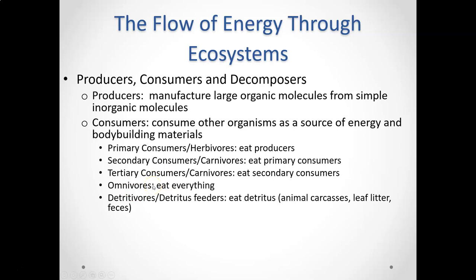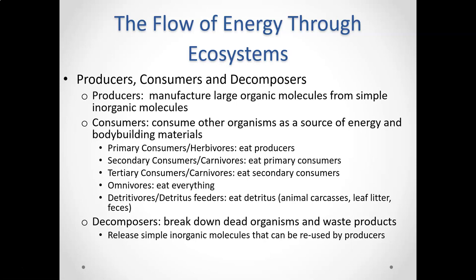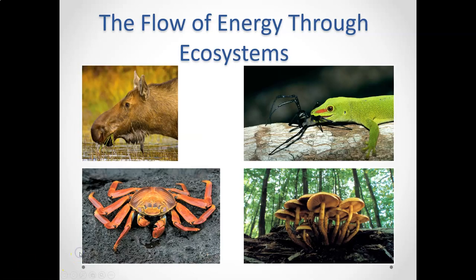There are also omnivores, which eat everything — carnivores, herbivores, and everything in between. We also have detritivores and detritus feeders, which eat leftover material like animal carcasses and leaf litter. Last but not least are decomposers — organisms that are actually breaking down dead and decaying things into their primary building blocks: nitrogen, carbon, phosphorus, and other elements that make up living things. Here are some picture examples of these different groups: a large herbivore, a carnivore, and decomposers like fungi.